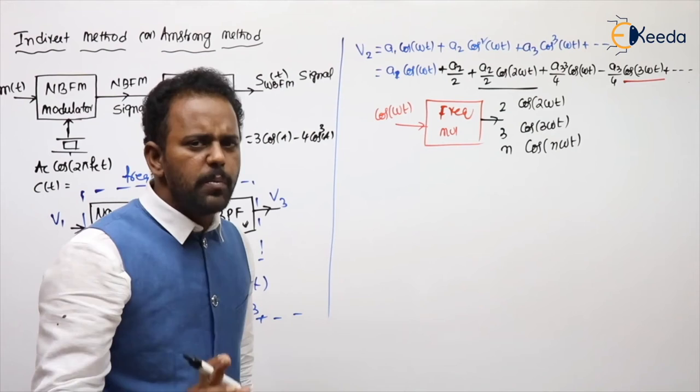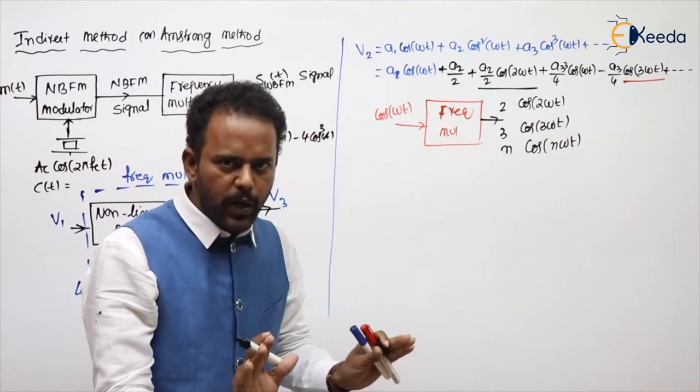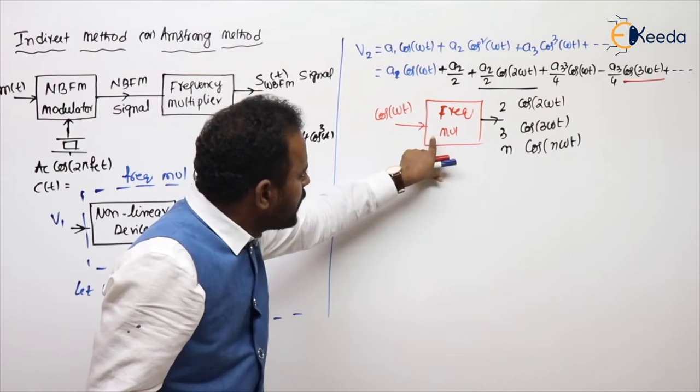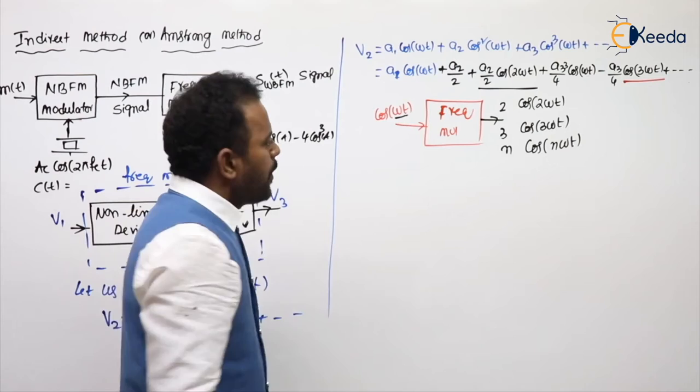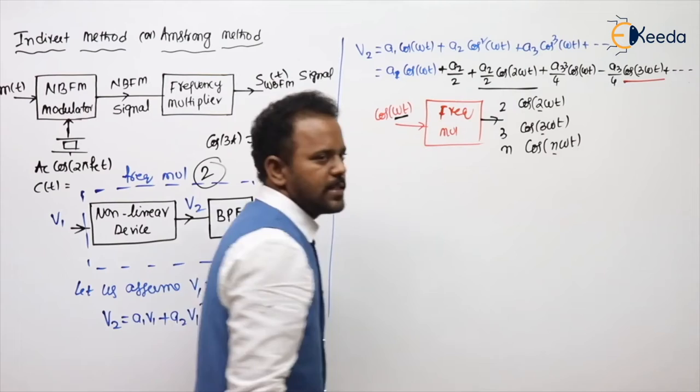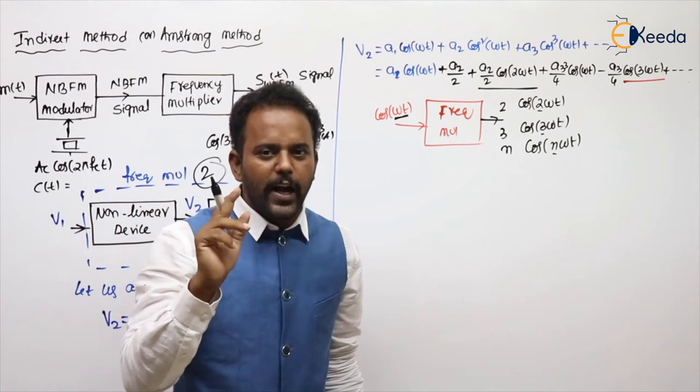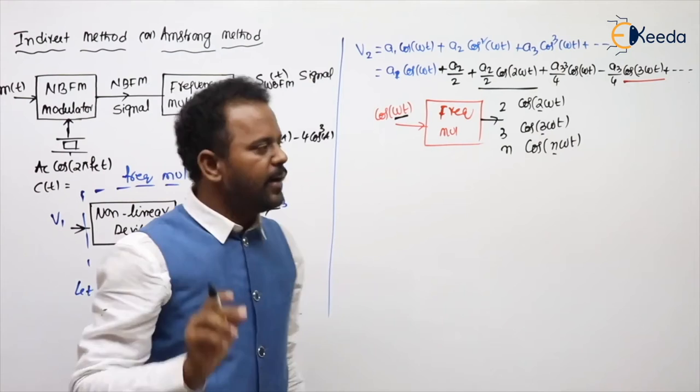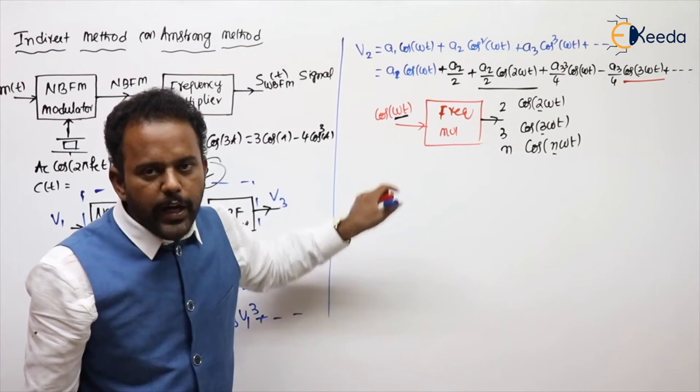The frequency multiplier output is the same signal but with the total angle multiplied by the gain n. If the gain is 2, the output is cos(2ωt); if gain 3, cos(3ωt); if gain n, cos(nωt). So the frequency multiplier multiplies the total angle of the input by n.